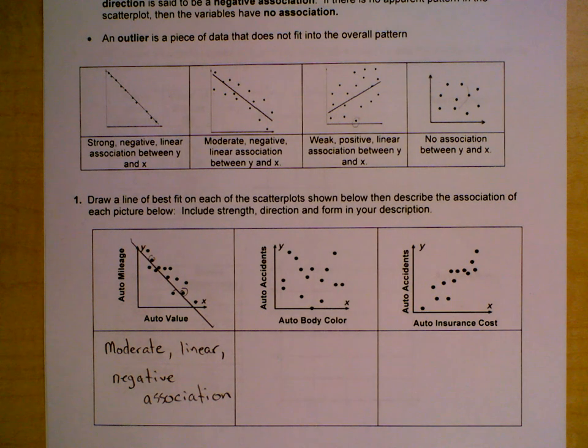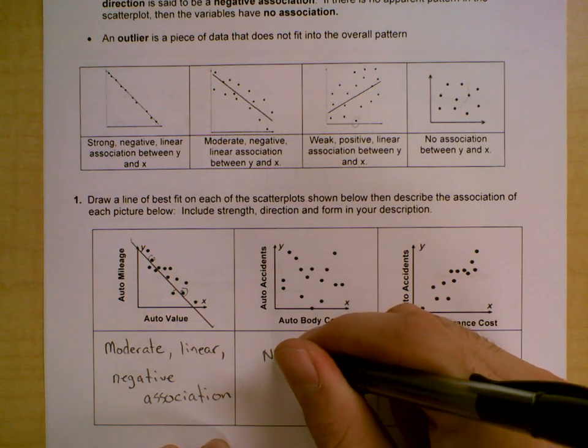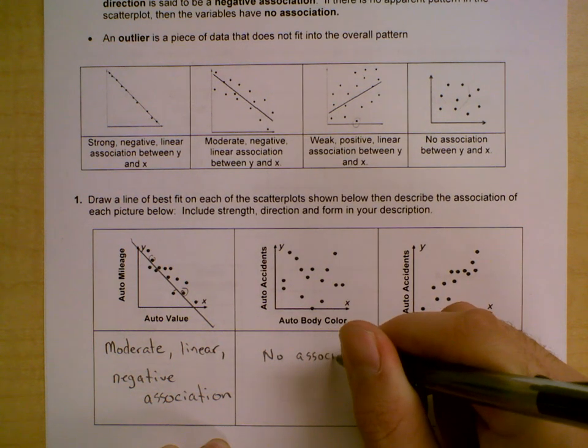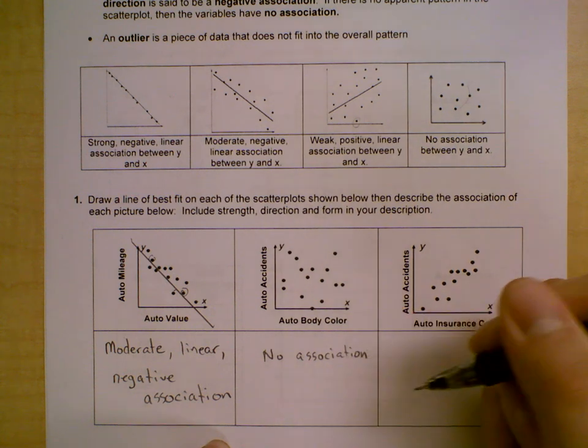All right, for number two, what do you think is the strength, the shape, and the direction of each of these? If you said no association for each of them, I would agree. We can't really tell that there is any type of association between this data.